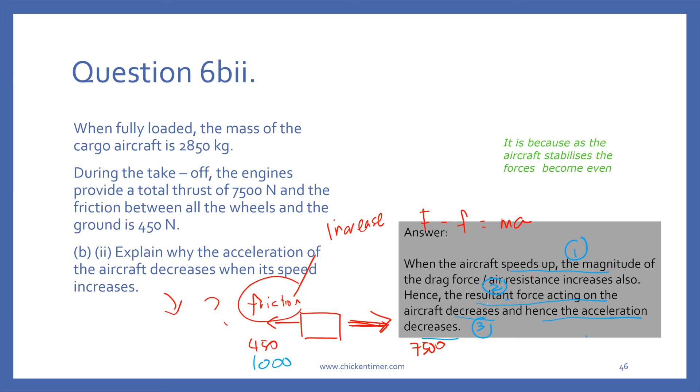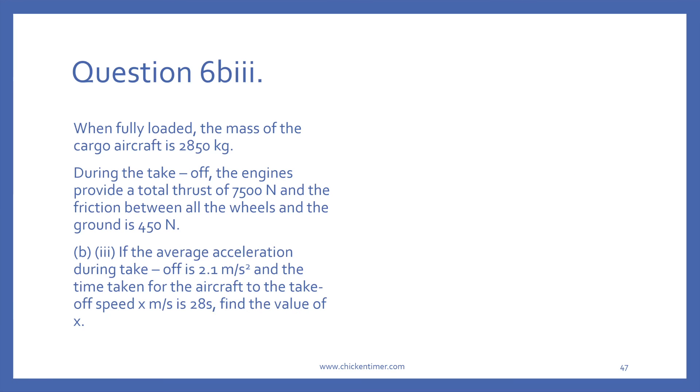We can draw a VT graph. It starts from zero takeoff, and it's going to reach speed X at 28 seconds. The acceleration is 2.1 meters per second squared. You can use this formula: A equals V minus U over T. The acceleration is 2.1, time is 28.